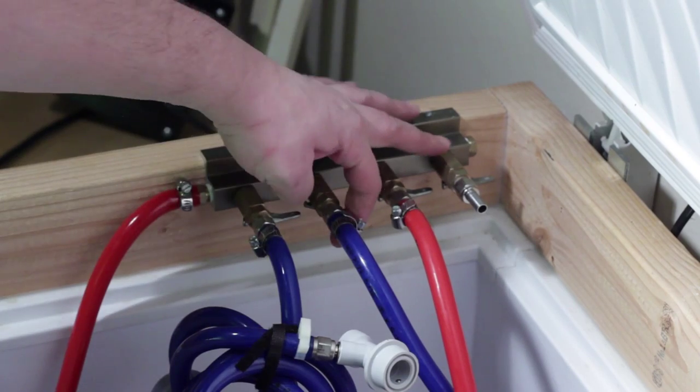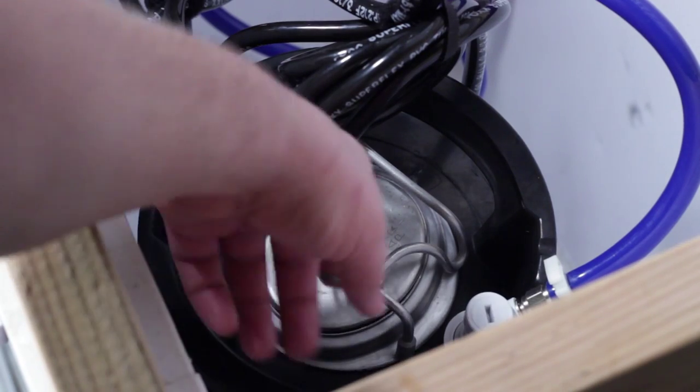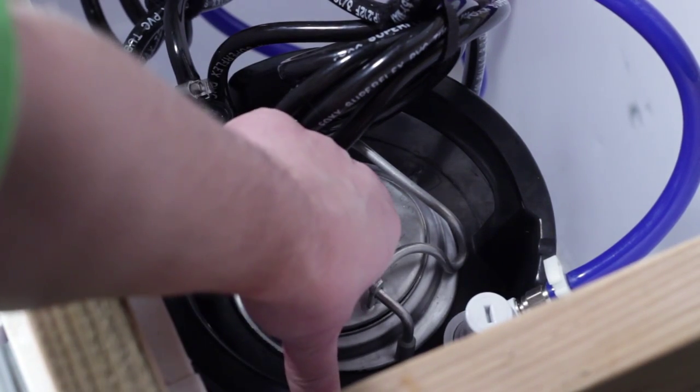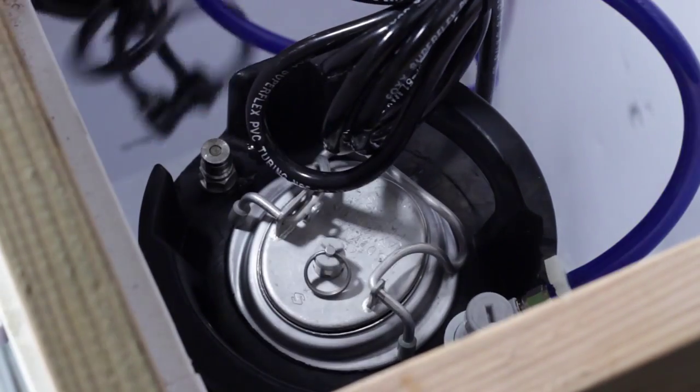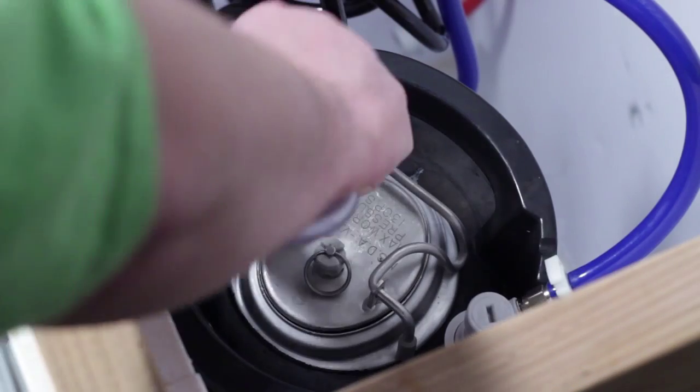First you'll want to turn off the gas to your keg. Then vent the CO2 from the keg. Remove the liquid line from the tap. Attach the liquid line for the beer gun.